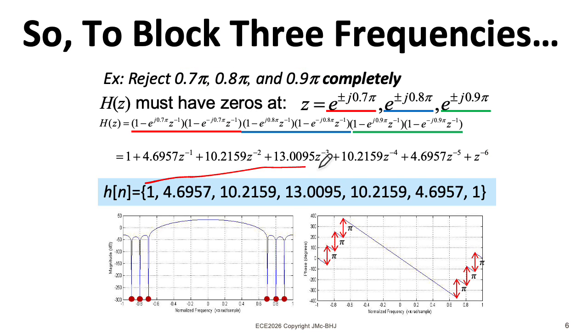One thing you could do is add up all of these coefficients to get the frequency response at DC, and then divide all the coefficients by that value to normalize your filter to have unity gain at DC. Or you could do something else. It depends on your application.